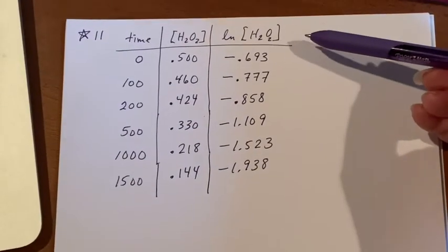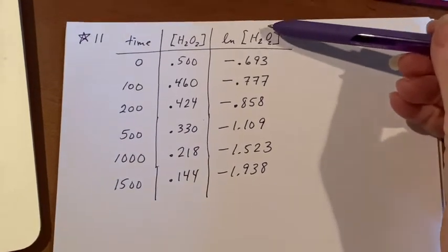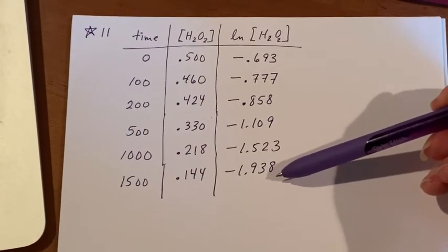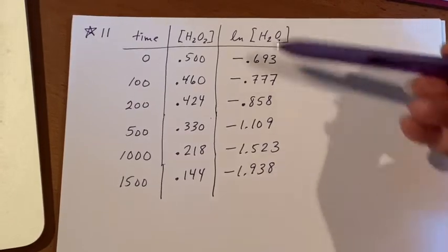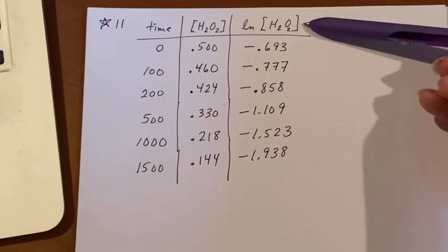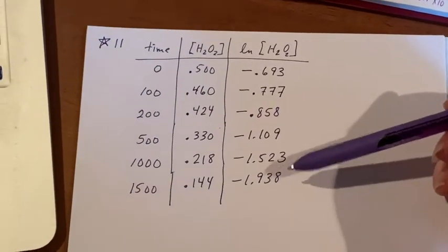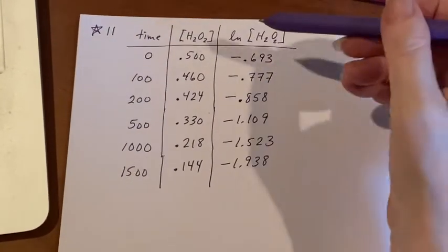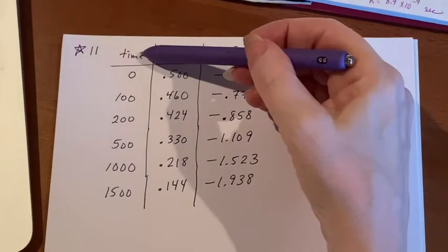So what I've done here is I have written it with an additional column because the first order integrated rate law uses logarithms. So I needed a column with logarithms of the concentration. Now, is a plot of this logarithm versus time linear?